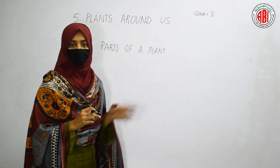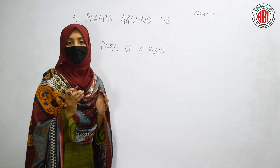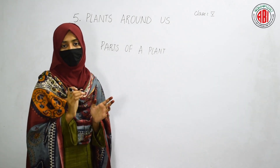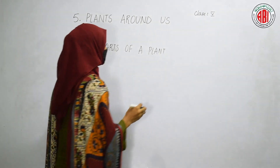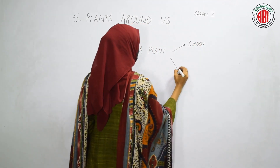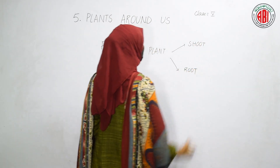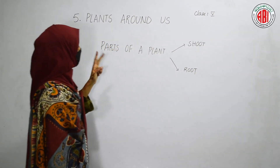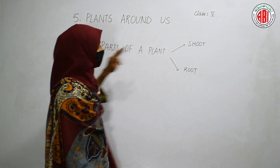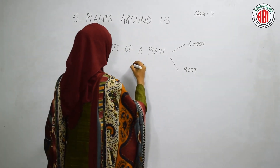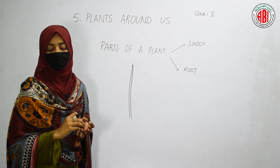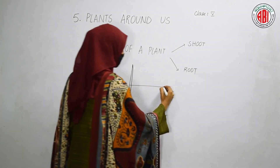Let us see the different parts in the structure of a plant. There are two main things to remember: some parts of a plant are present above the ground and some are found under the ground. The parts present above the ground are called the shoot, and the part found under the ground is called the root. The shoot system includes the stem, which gives support and makes the plant stand erect.